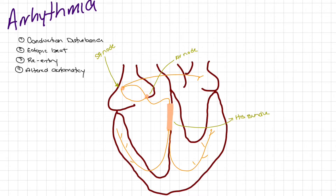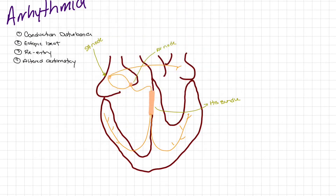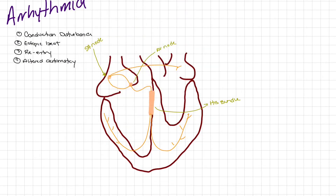A conduction disturbance is a blockage of normal conduction — specifically a blockage of the normal fast pathways. For example, if we talk about something like a bundle branch block, left versus right bundle branch blocks, what's occurring is a blockage of the normal fast pathway within one of our bundle branches.